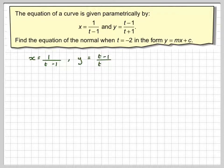So we've got x is 1 over t minus 1 and y is t minus 1 over t plus 1. This is quite a complicated question so we'll break it down into stages. First of all we've got to find dy by dx, but before we can do that we need to find dx by dt.